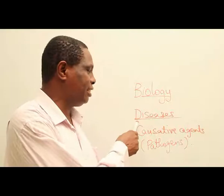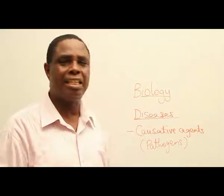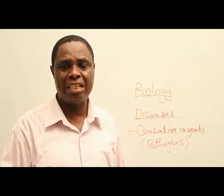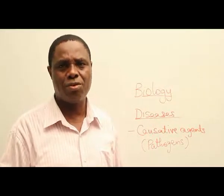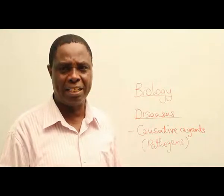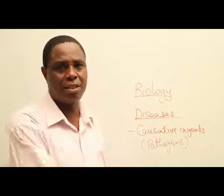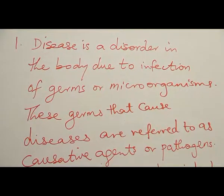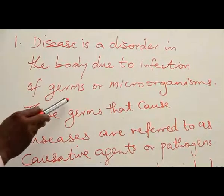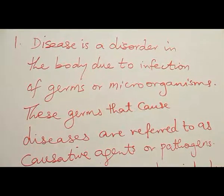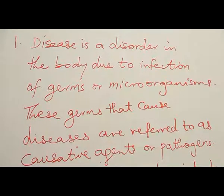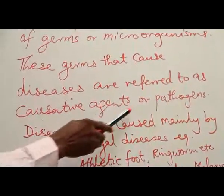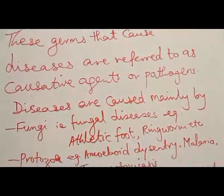Let's look at disease. Disease is a state of disorderliness in the body, and these disorderliness are caused by germs, which are called causative agents or pathogens. As already introduced, disease is a disorder in the body due to infection of germs or microorganisms. These germs that cause diseases are referred to as causative agents or pathogens.